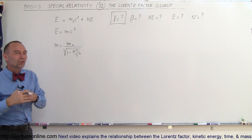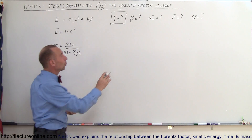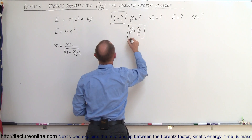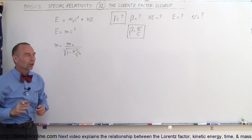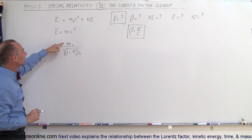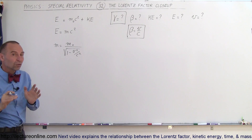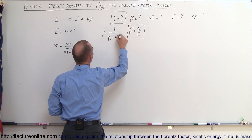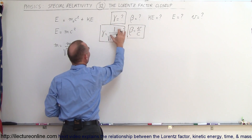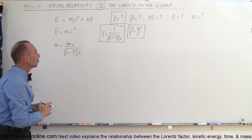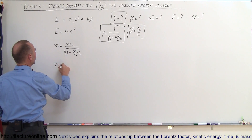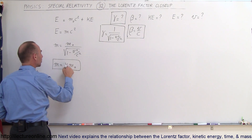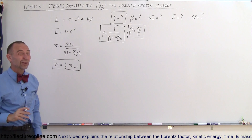The quantity V squared over C squared appears in so many places that V over C is sometimes written as beta. So beta is simply the ratio of the velocity divided by the speed of light, and the denominator can also be written as 1 minus beta squared. The quantity 1 over the square root of 1 minus V squared over C squared can also be written as gamma. So gamma equals 1 divided by the square root of 1 minus V squared over C squared.